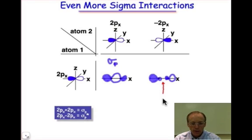And finally, a sigma star. And that sigma star is the result of combining p orbitals together, so we call that sigma star p.